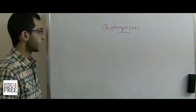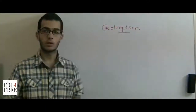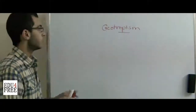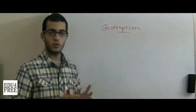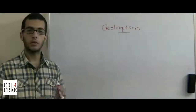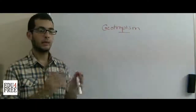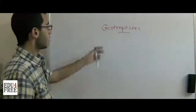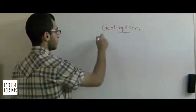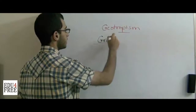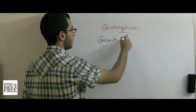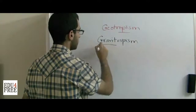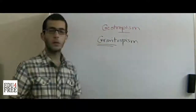Tropism is a curvature which occurs in the plant, either by the stem or the root, due to the different distribution of external factors on one side of the plant than the other side. Geotropism is also called gravitropism, and it is apparent that this is related to gravity.